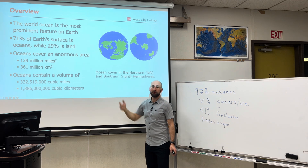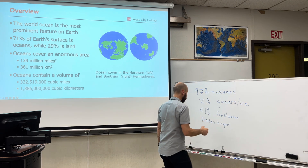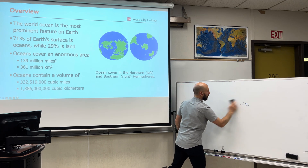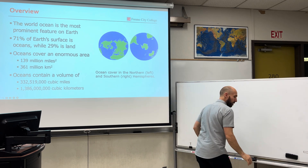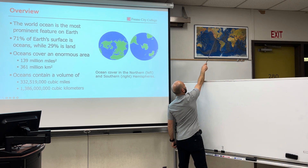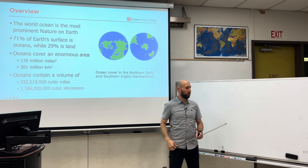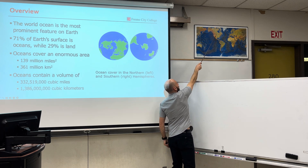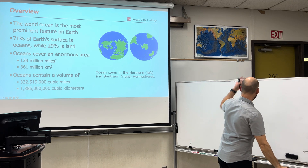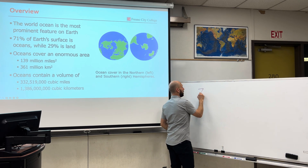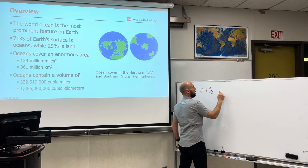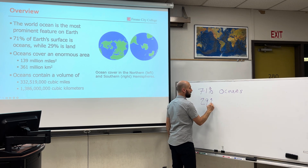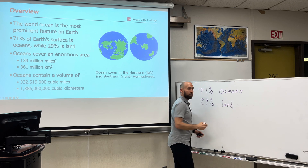Oceans cover 71% of the earth, contrary to the other 29% of earth's surface which is covered by land. When you look at the globe, when you look at a map here, we can see two main features stick out — water and land, more ocean than land. We've got about 71% of earth's surface as oceans, with the remaining 29% being land. So there is more water covering the surface of the earth than there is land. Oceans cover an enormous area, about 139 million square miles — that's 361 million square kilometers.